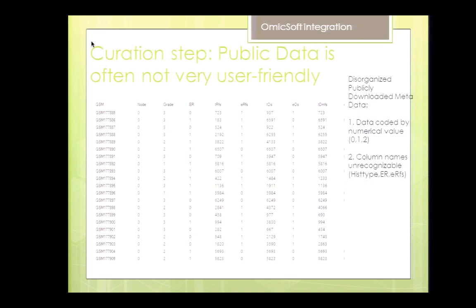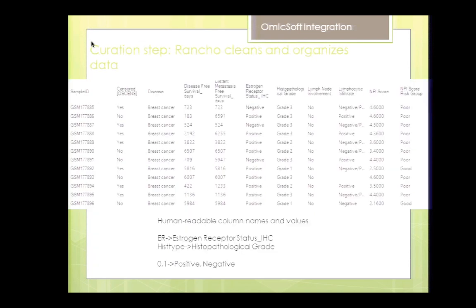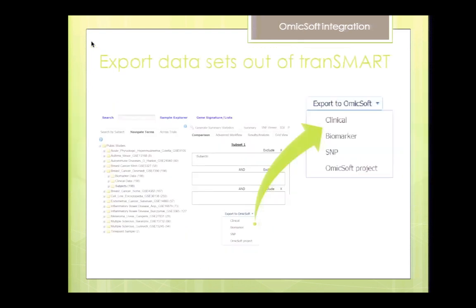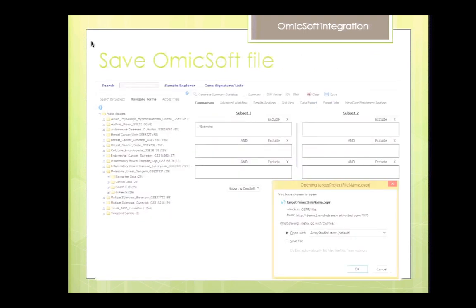What we do is decode and clean up the data, because in this particular set there is a mistake in the GEO repository. After curation the data set looks like this, and that is actually the format used to load the study into Transmart. Here in our internal installation you can see the data set with the typical Transmart ontology, and we've created this button that exports the OmicSoft project — both gene expression data and the curated clinical data set — in one file.